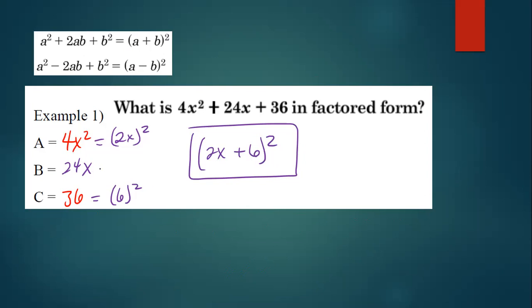My factor is just going to be 2x plus 6 squared. Your B is going to equal double 2x times 6. It's going to work out. Anyway, that's it. That's the answer. That's the shortcut.